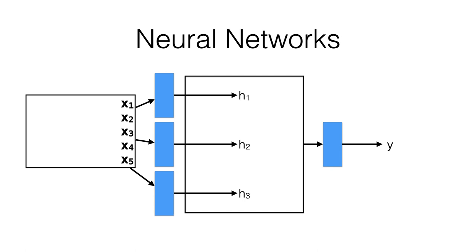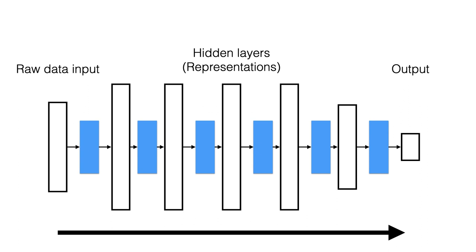We generalize this by thinking of inputs as x1 through x5 and writing h for hidden variables. This is because usually what you have is just input and output, and these middle values are hidden. At a high level, this is how people often draw neural networks: on the left you have raw data input, on the right is the output — whatever you want the smart application to provide after you give it the input.